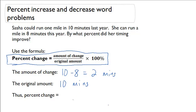So now we can figure out her percent change. The amount of change, two, divided by her original amount, ten, that's going to equal point two.